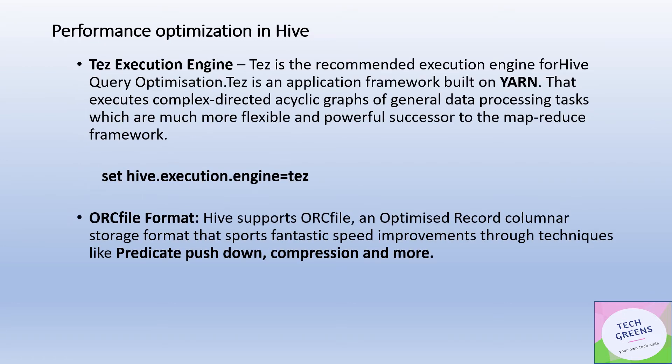The first option is the TEZ execution engine. There are three execution engines in Hive: TEZ, Spark, and MapReduce. TEZ is the recommended execution engine with Apache Hive. It works on the concept of a DAG — Dynamic Acyclic Graph — execution. Whenever you submit a query, a DAG is created for data processing, and it is much faster than MapReduce. To enable the TEZ engine, set the property: hive.execution.engine = tez.